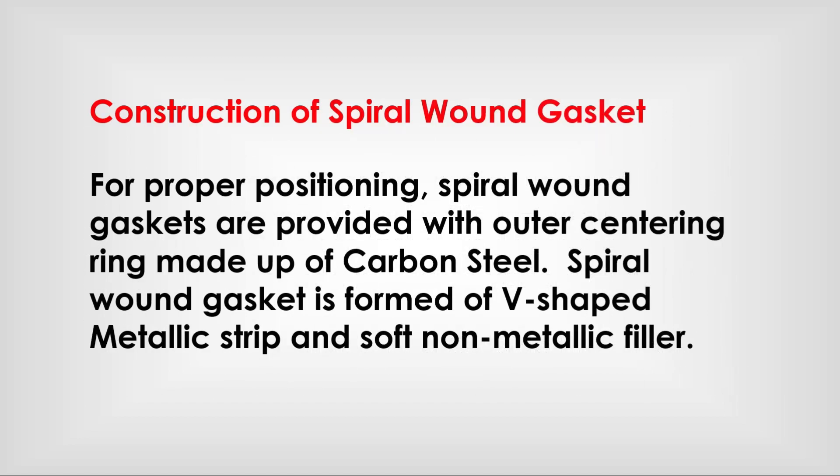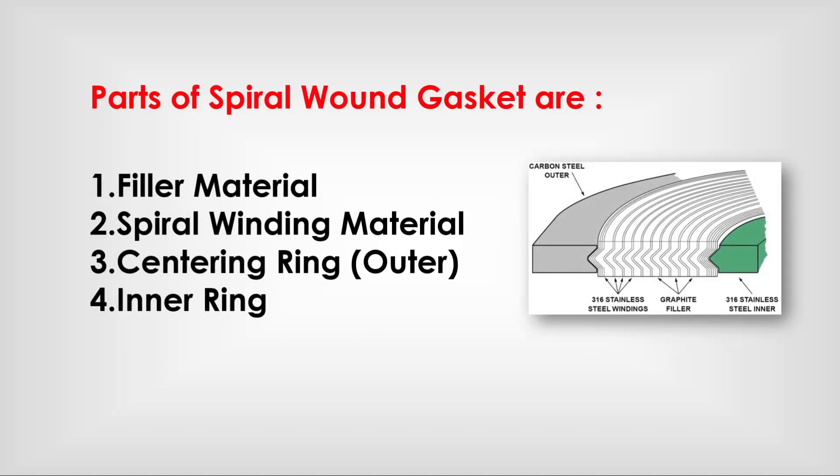Construction of spiral wound gaskets: for proper positioning, spiral wound gaskets are provided with an outer centering ring made of carbon steel. The spiral wound gasket is formed of a V-shaped metallic strip and soft non-metallic filler. Parts of a spiral wound gasket include filler material, spiral winding material, center ring, and inner ring.